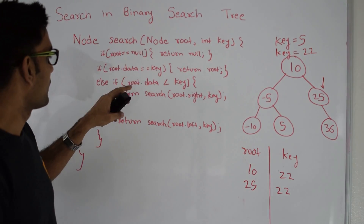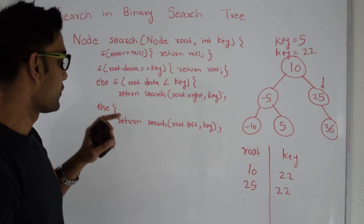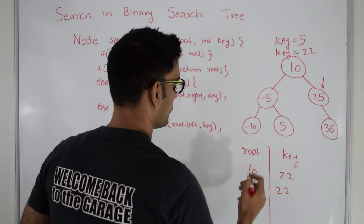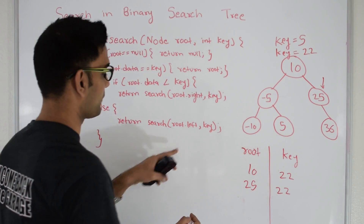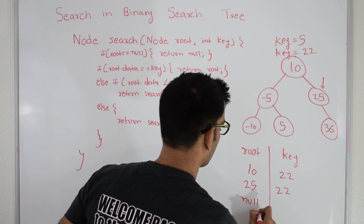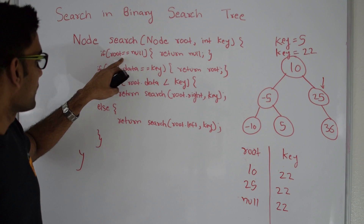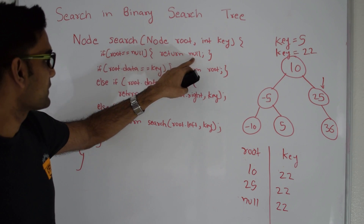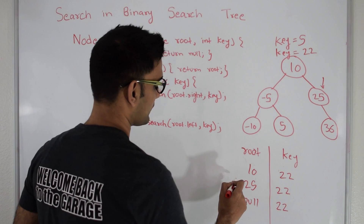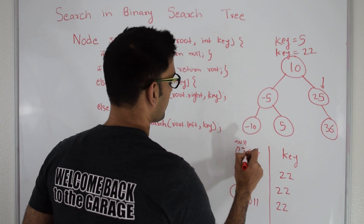Again root is not null. Root data is not same as key. Root data is not less than key, so we search root's left. We go into 25's left — 25's left is null. So root becomes null and the key we are searching for is 22. We come back to the top — root is null this time, so this returns null. Null gets returned to the calling function, and finally null is returned.